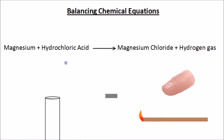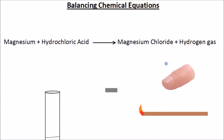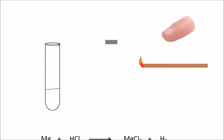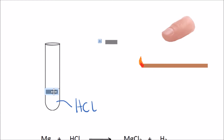It's magnesium reacted with hydrochloric acid, and it produces magnesium chloride and hydrogen gas. What you probably did at school was you had a test tube of hydrochloric acid and you would have put into that test tube a piece of magnesium.